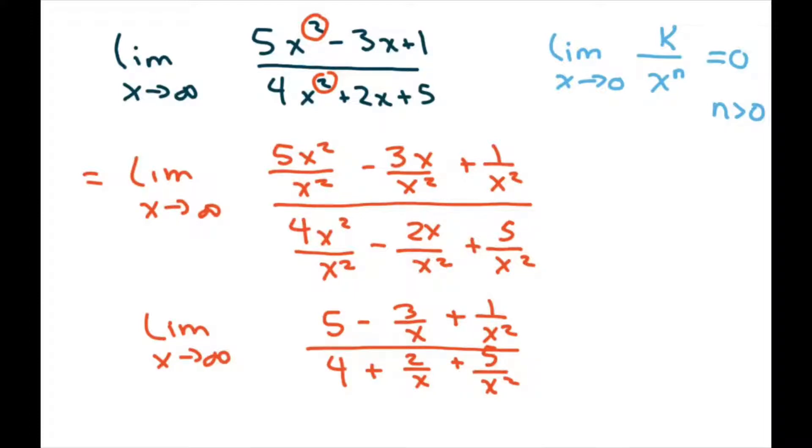So what happens is these right here, the limit is 0. So this is 0 and this is 0. This is 0 and this is 0.